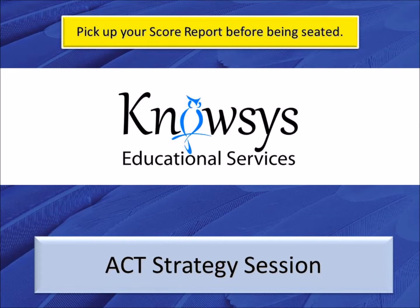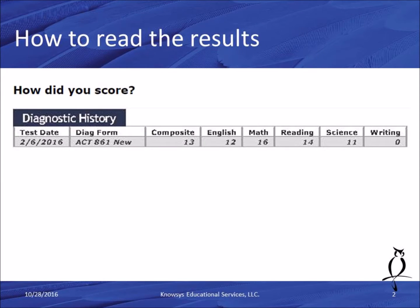Welcome to the Gnosis ACT strategy session. You'll want to have your score report in hand before you go through this session. We're going to start on the first page of the report at the top where it says Diagnostic History. This tells you the name of the exam you took and then gives you your scores: composite, English, math, reading, science, and writing.